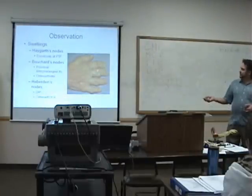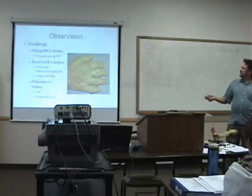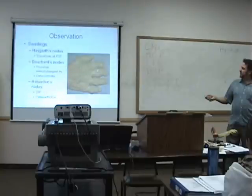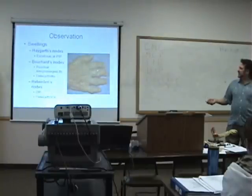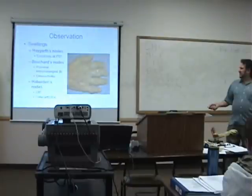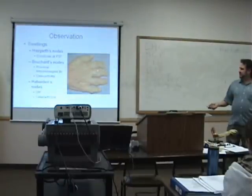Here are some of those nodes we're talking about. Haygarth's nodes are usually at the PIPs. Bouchard's nodes are also usually at the PIP, and those are usually from osteoarthritis. Heberden's nodes are usually at the DIPs, and again, that's osteoarthritis as well.